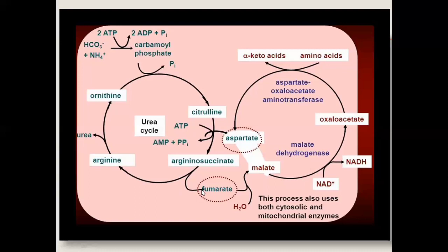NADH goes to the electron transport chain through oxidative phosphorylation, resulting in ATP production. When NADH goes to the electron transport chain, we have 2.5 ATP production. So 2.5 ATP is produced from the NADH generated by the fumarate-to-malate-to-oxaloacetate conversion.